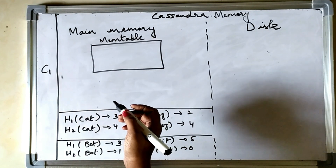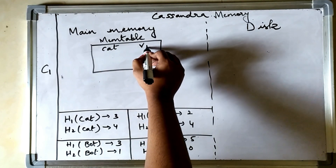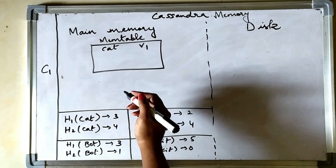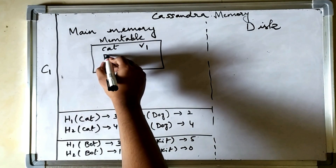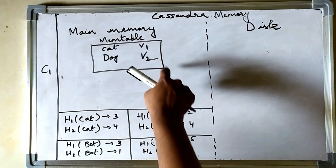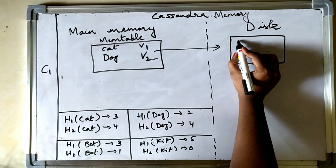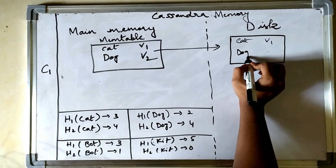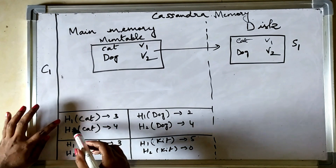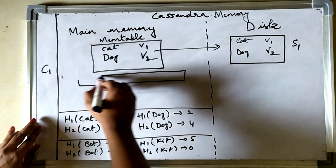As an example, a client tries to write a value with key 'cat' and value v1. It is first stored in our memtable and success is returned to the client. Then another write comes in — key 'dog' — and it is also stored in the memtable. Say our threshold is 2, so the memtable is flushed as an SS table to disk containing 'cat' and 'dog'. But before flushing, we calculate the bloom filter corresponding to that SS table.